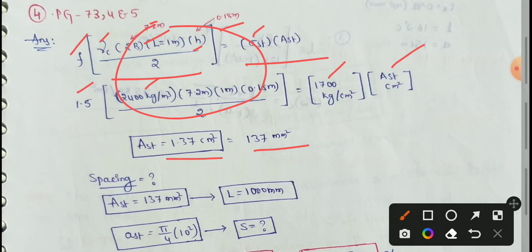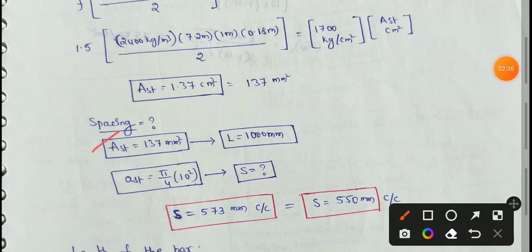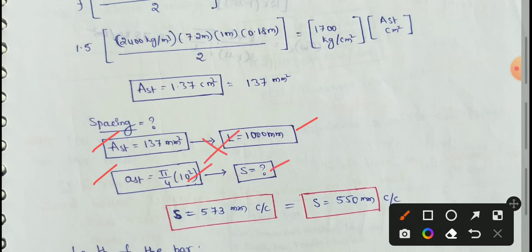AST simplifies to a value of 1.37 cm², which converts to 137 mm². AST is equal to spacing. AST value is 137 mm². Length is 1 meter, equal to 1000 mm. AST is equal to (π/4) into D squared — diameter squared.